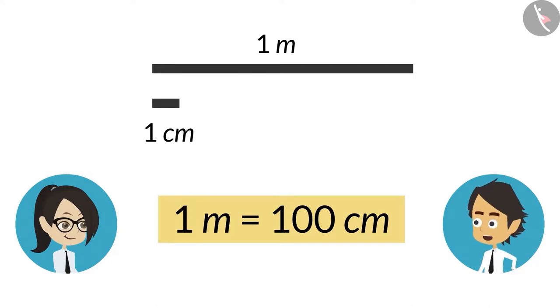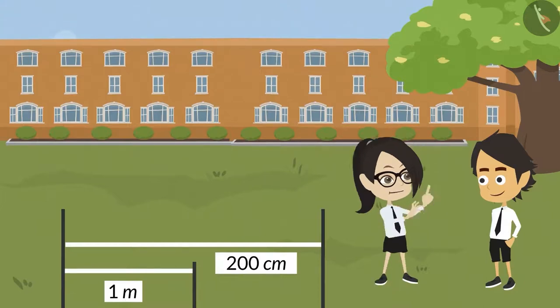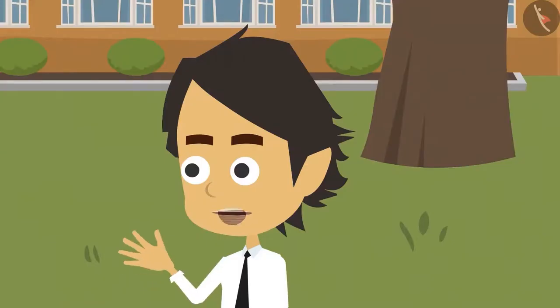And objects can be measured both in meters and centimeters. Oh, this means the length which can be written in meters, the same can be written in centimeters too. Yes, now you have understood.